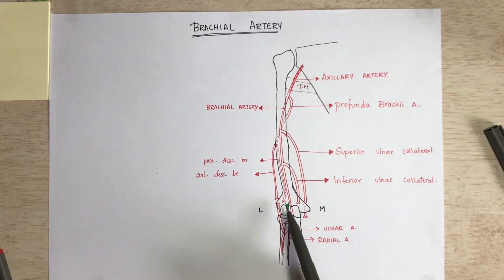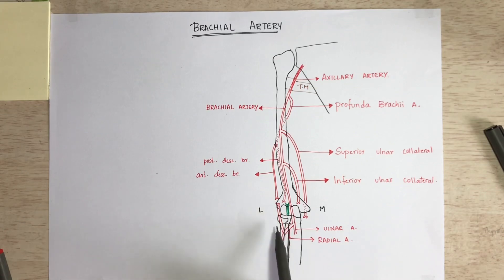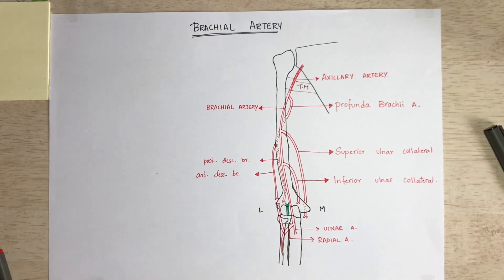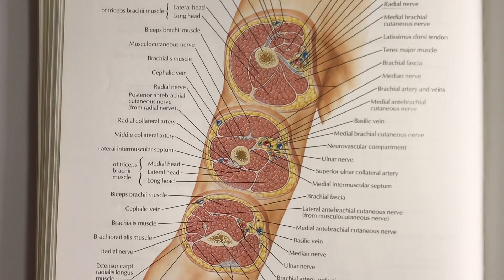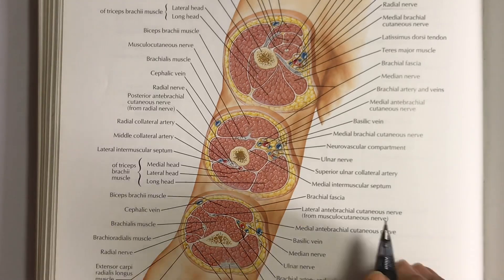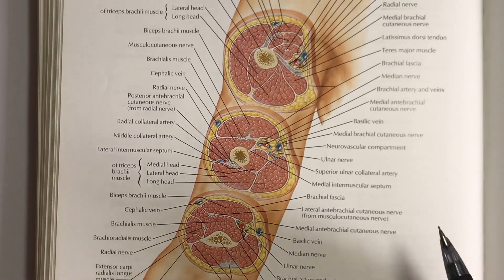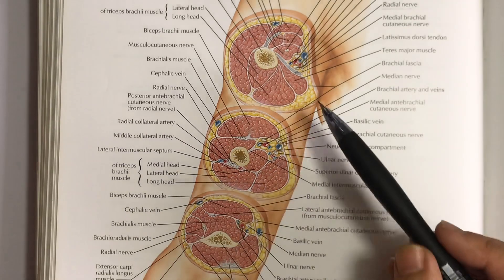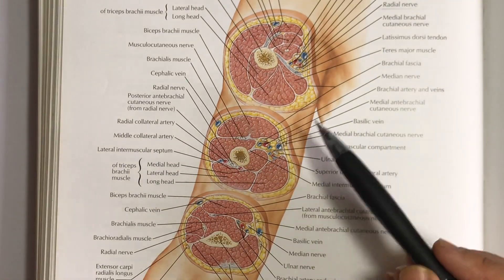It continues until the level of the neck of the radius, where it divides into the two terminal branches. Now let's look at a few relations of the brachial artery.